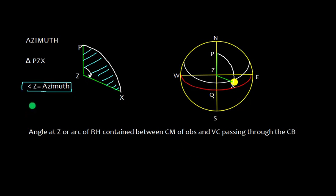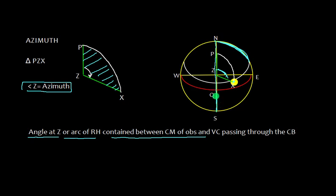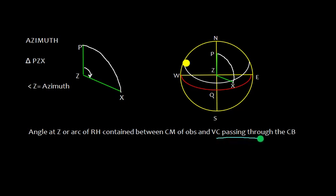We can define azimuth as the angle at the observer's zenith, or arc of the rational horizon. If a body is here at X, whatever is the arc of rational horizon, it is the angle at Z contained between the celestial meridian of the observer — which is also called the principal vertical circle — and the vertical circle passing through the celestial body. In this rational horizon diagram, this vertical circle is expressed with a straight line. That is the definition of azimuth.